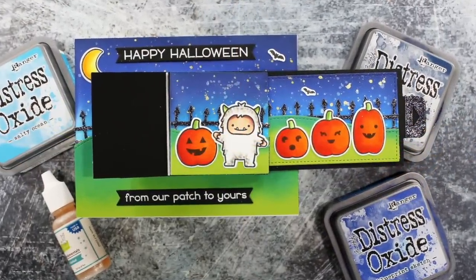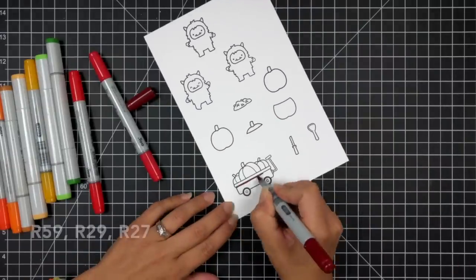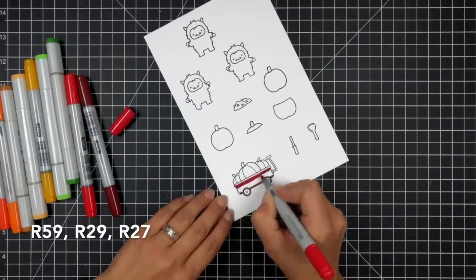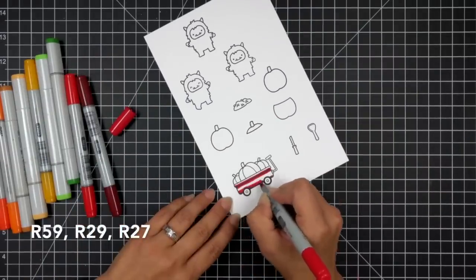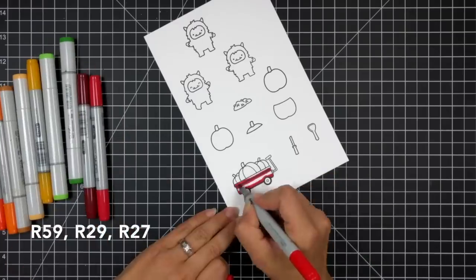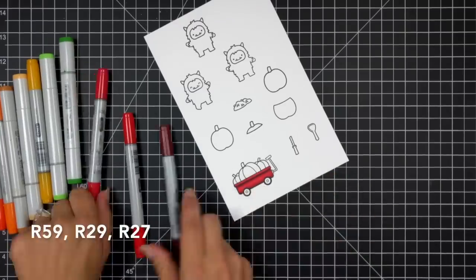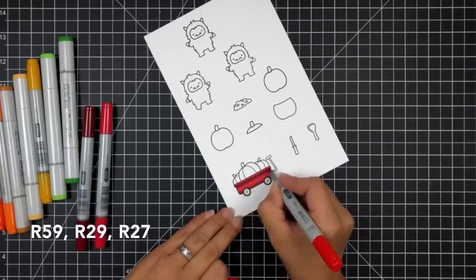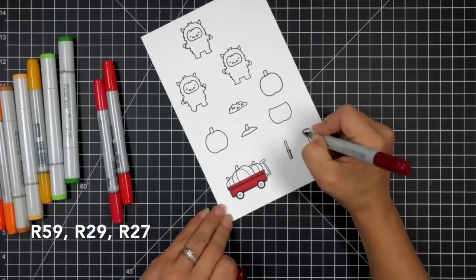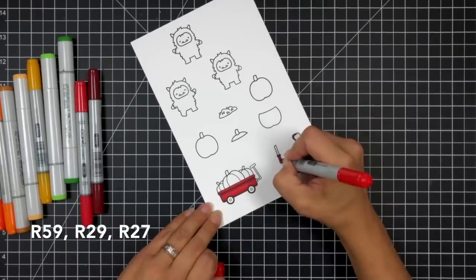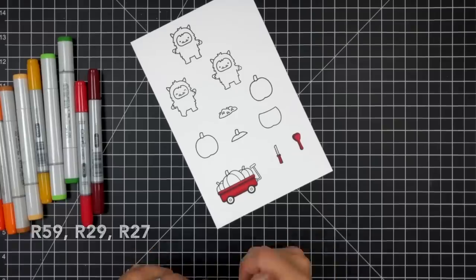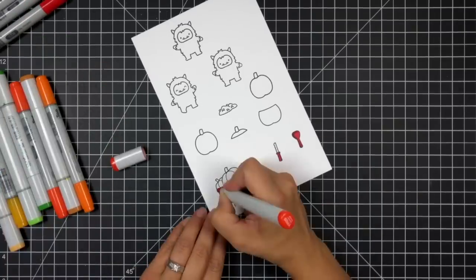I'm going to start off by doing some Copic coloring. Here I have images stamped from Happy Harvest which is that wagon that I'm coloring now, Pick of the Patch which are the pumpkins and the carving knife and the spoon, and then some yetis from Yeti or Not. I stamped the images onto white cardstock from Lawn Fawn in jet black ink which is Copic friendly.